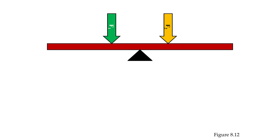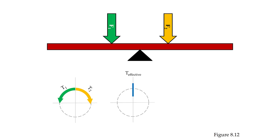The same idea can be applied to torque. In this particular case, we have two forces: F1 to the left of a pivot point, and F2 to the right of a pivot point. F1 is going to create a counterclockwise torque about the pivot point, while F2 is going to create a clockwise torque. Now if the torques created by F1 and F2 are equal — which would occur if the magnitudes of the two forces are the same and they are equidistant from the pivot point — then the effective torque would be zero, and our angular acceleration would also be zero.